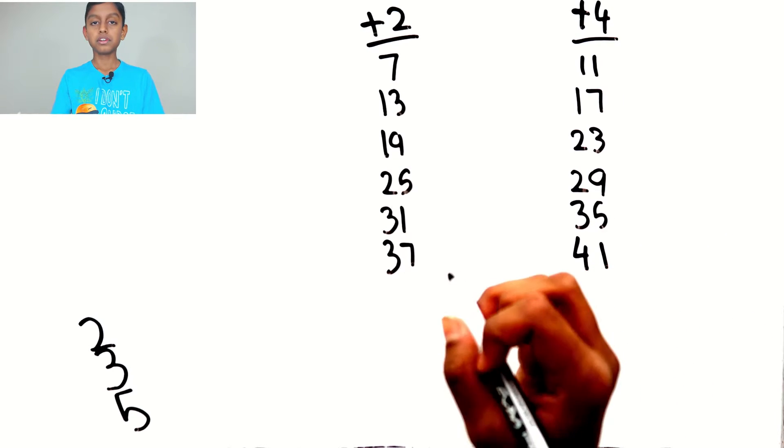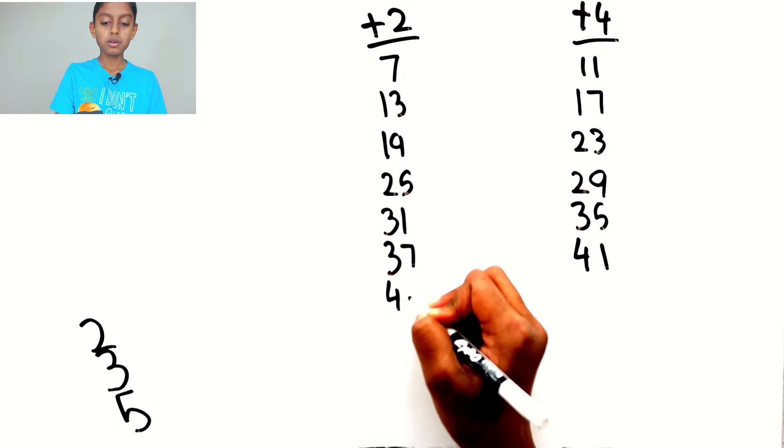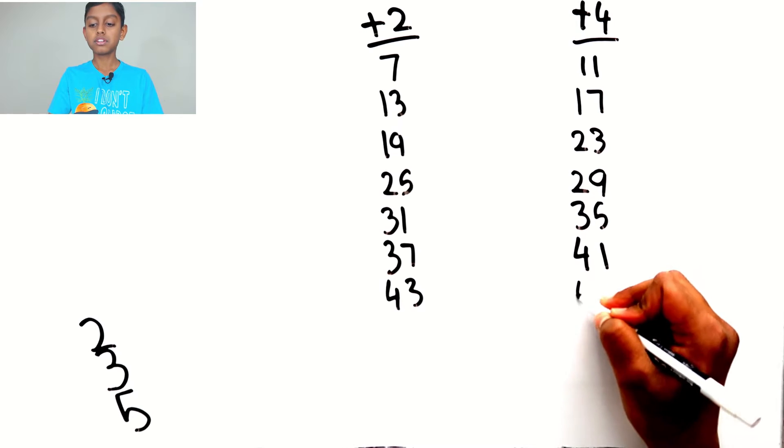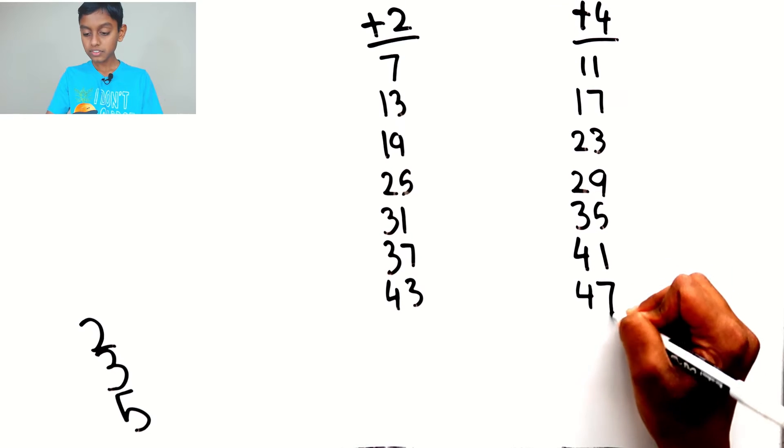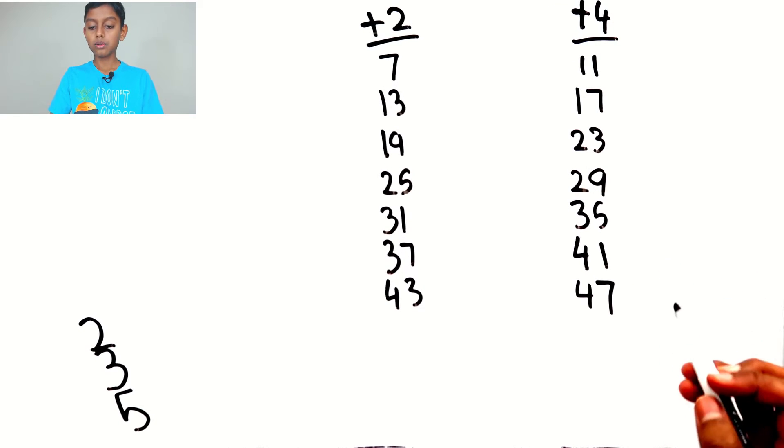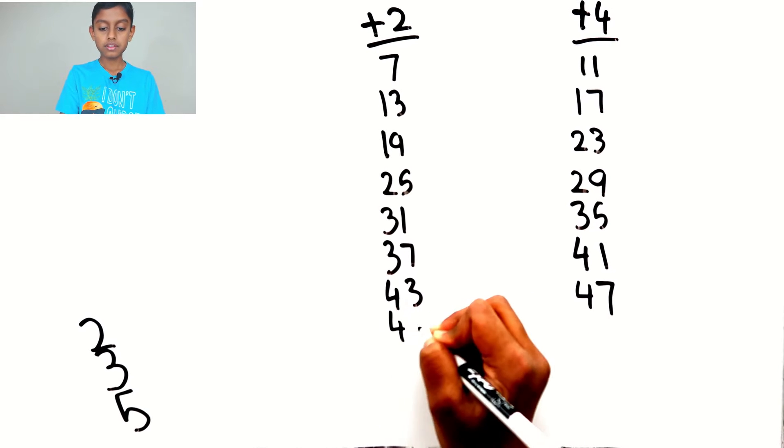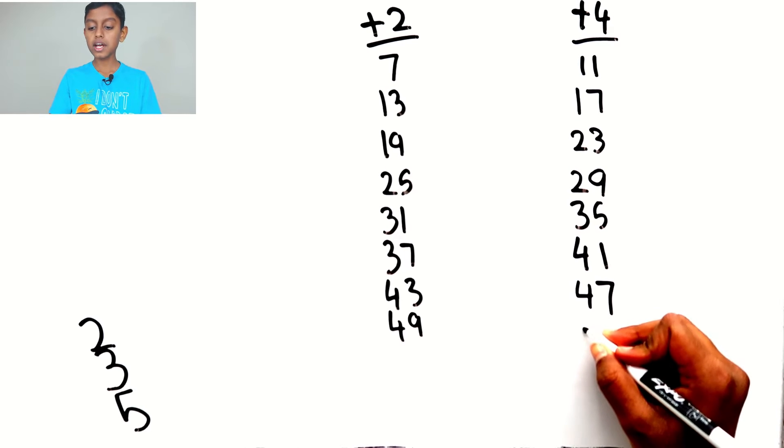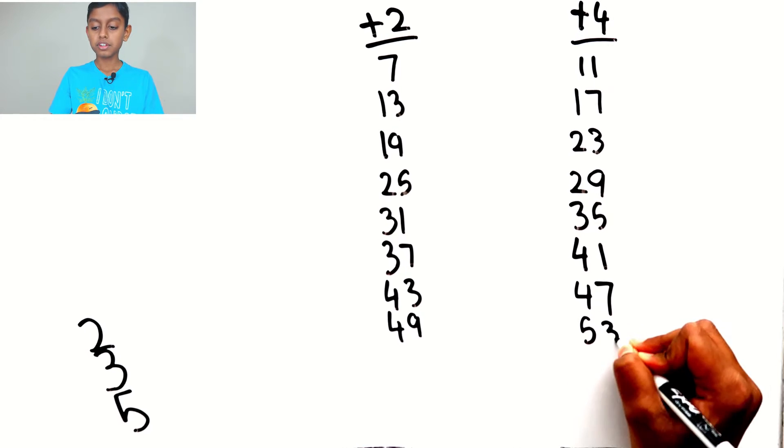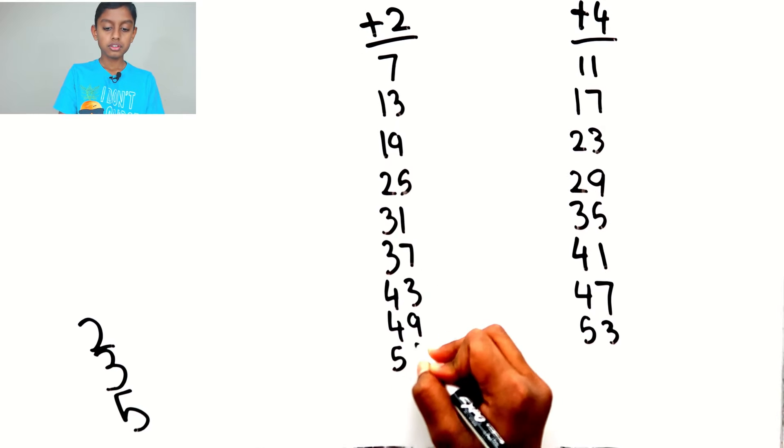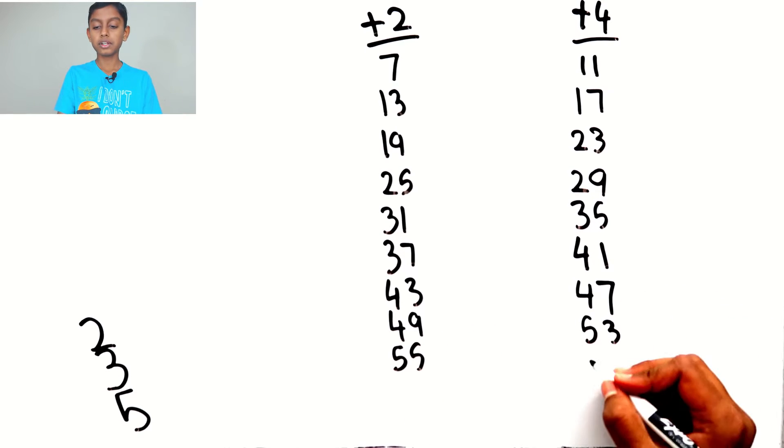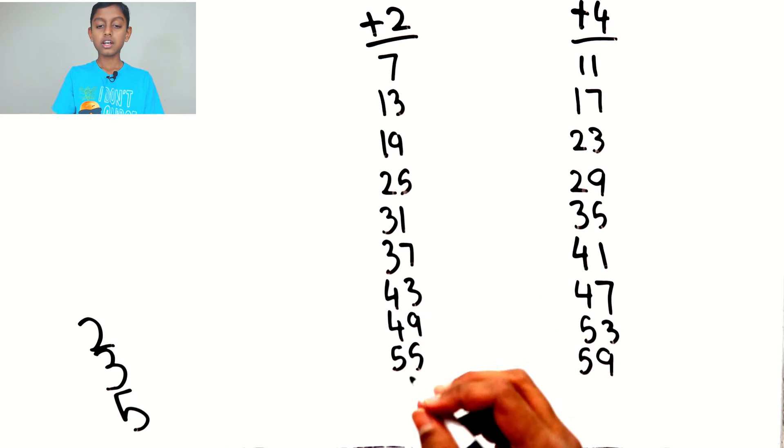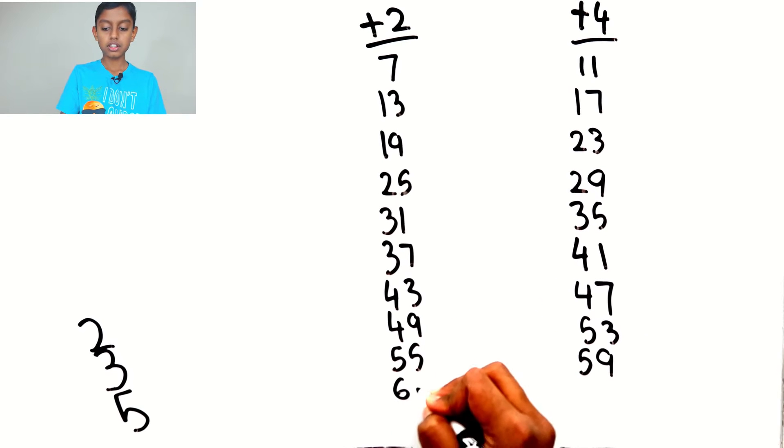Add 2 to 41 to get 43, add 4 to 43 to get 47, add 2 to 47 to get 49, add 4 to 49 to get 53, add 2 to get 55, add 4 to 55 to get 59, add 2 to 59 to get 61.